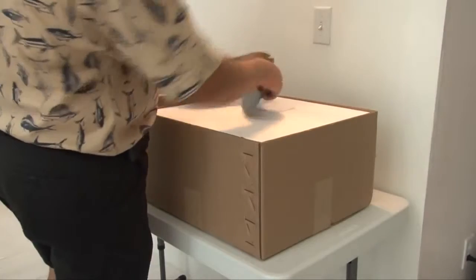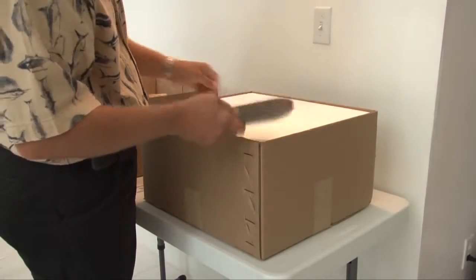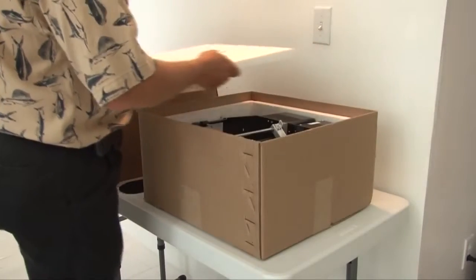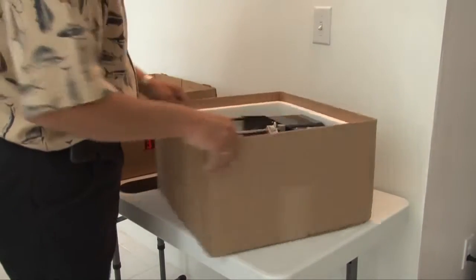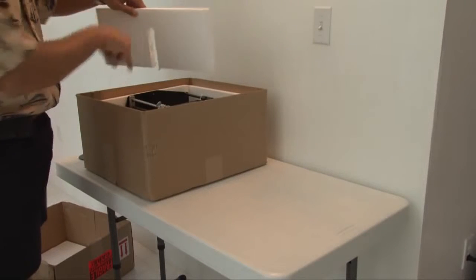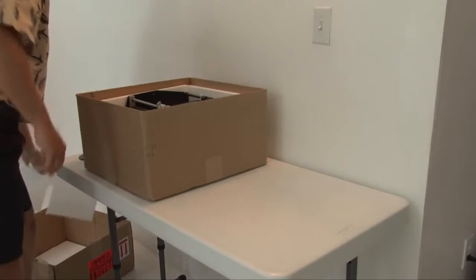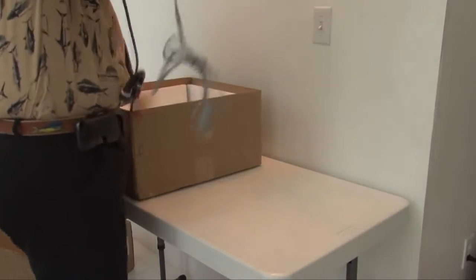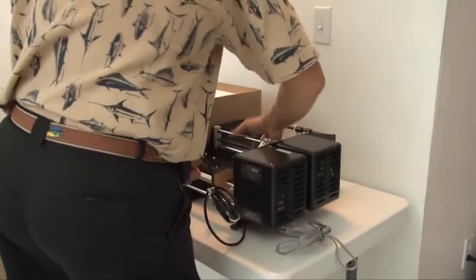These are your side guides. Now we'll remove the foam. Before removing the machine, you need to remove the foam in the front. Now you can remove the machine out of the box by lifting up on the two bars in the middle.